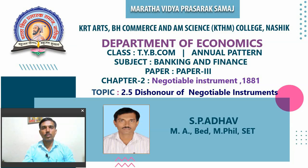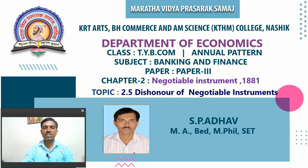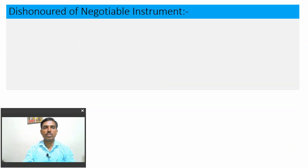Hello friends, welcome to all of you. This is Chapter number 2, Negotiable Instrument Act 1881. This is the second last point of the chapter, and today we are looking at section 2.5, Dishonor of Negotiable Instrument. In the previous lecture, we covered concepts 2.3 and 2.4 — Negotiation and Presentment. Today we discuss Dishonor of Negotiable Instrument.